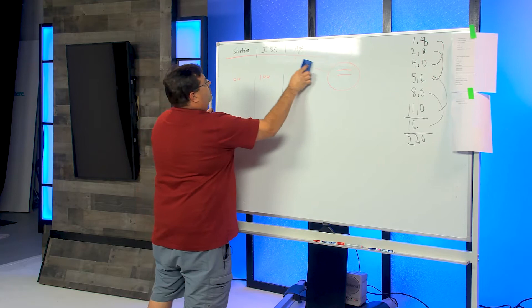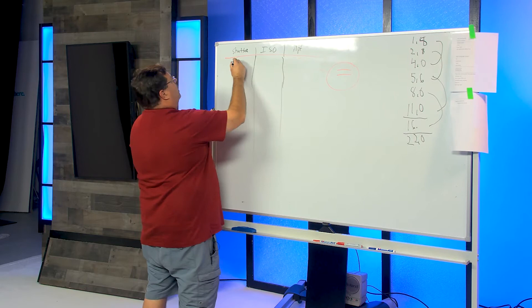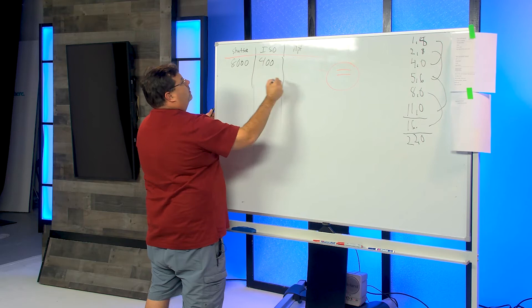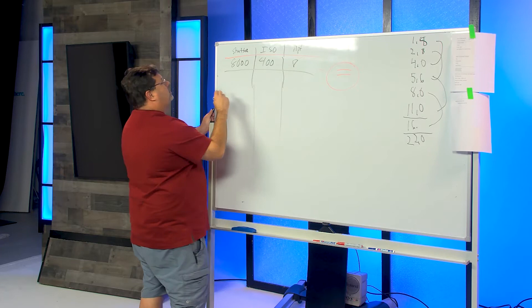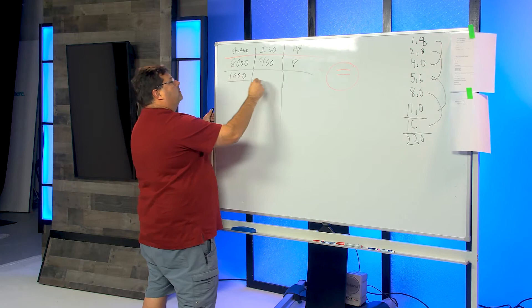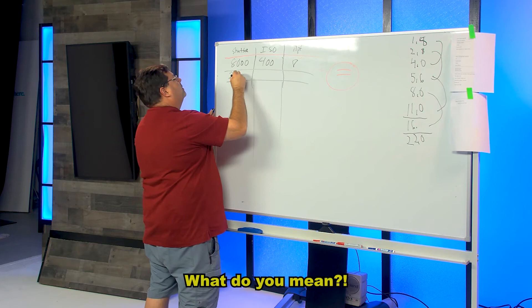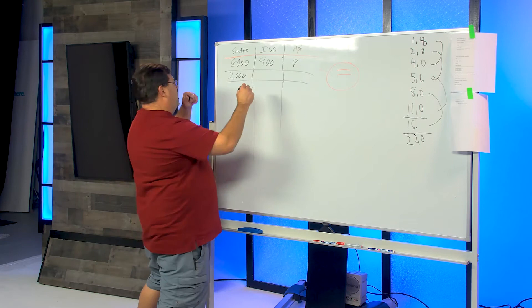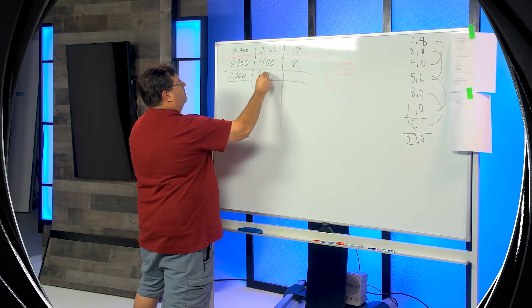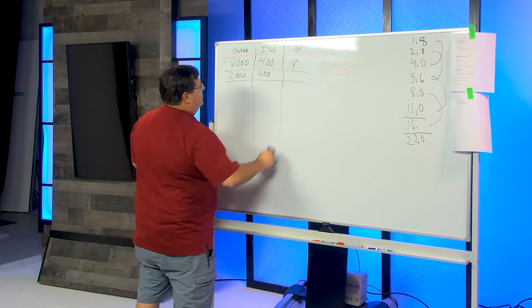Let's do a hard one. Shutter speed 1/8000, ISO 400, aperture f/8. Drop that shutter speed down to 1/2000. And I'm going to change the ISO too - 200. What aperture?